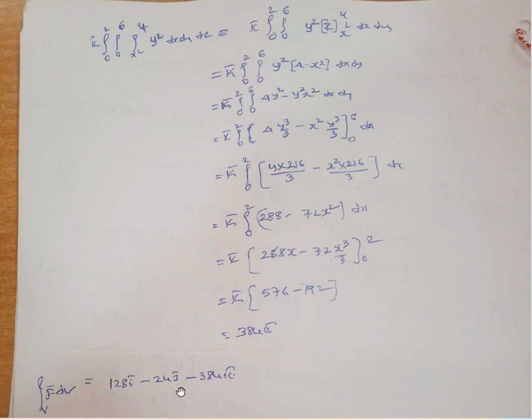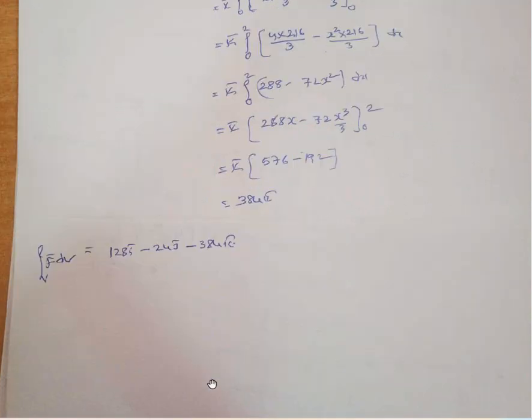So the final answer is 128 ī − 24 j̄ + 384 k̄. Thank you.